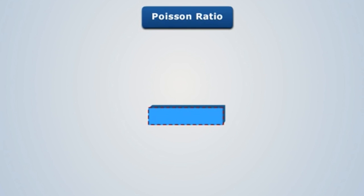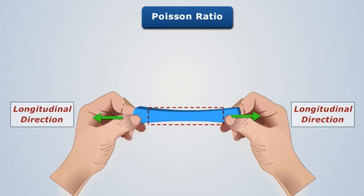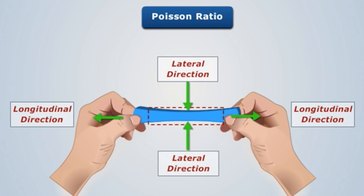Today we will be discussing auxetic materials, but first let's talk about a regular material. When a normal material is under axial tension, it usually tends to compress in the lateral direction. In contrast, if the material is compressed, it usually tends to expand in the lateral direction.